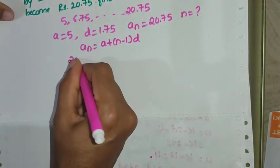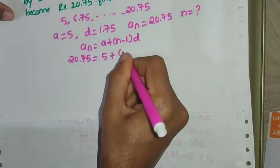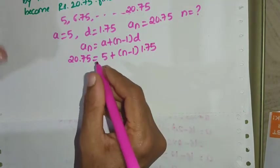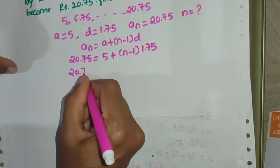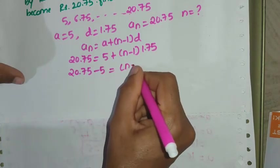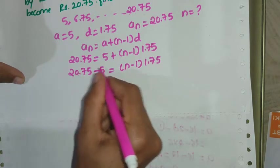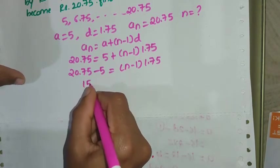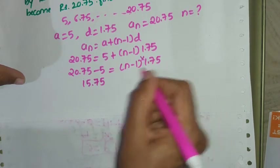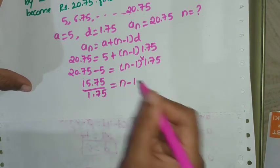a_n is 20.75. A is 5, plus (n-1) times D = 1.75. So 20.75 - 5 = (n-1) × 1.75, giving 15.75 = (n-1) × 1.75. Dividing both sides by 1.75 gives n - 1 = 9.